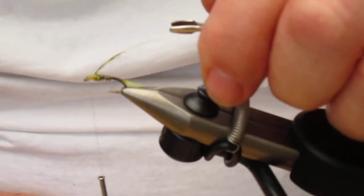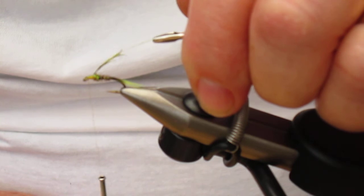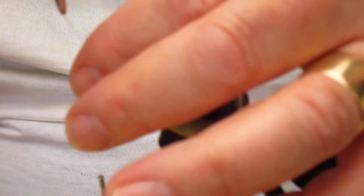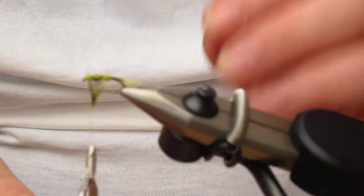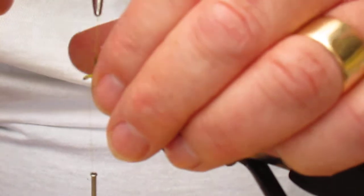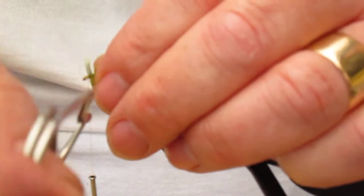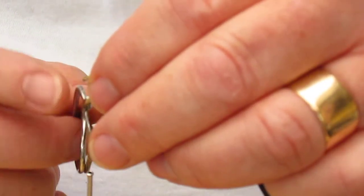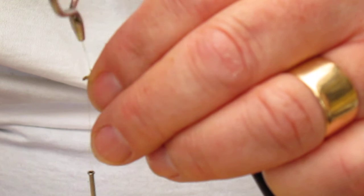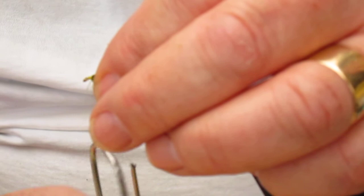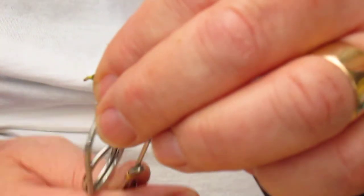Now we don't want too many turns of this, although because of the length of the hackle you won't get a lot of turns. But we want to stroke it back, take it around, stroking it as we go. And we're going to get possibly three turns here, which is just about right. Let's tie it off. Looks good.